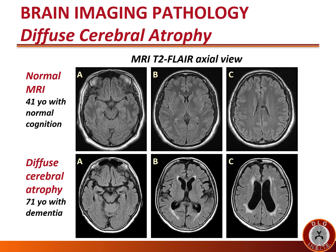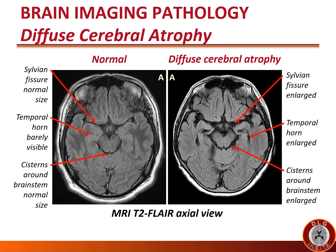Now let's appreciate the appearance of diffuse cerebral atrophy on brain imaging, comparing MRI FLAIR axial images in a 41-year-old with normal cognition versus a 71-year-old with dementia. In the normal patient, the sylvian fissure is normal in size, the temporal horn is barely visible, and cisterns around the brain stem are normal in size. In the patient with dementia and atrophy, the sylvian fissure and temporal horn are enlarged, and the cisterns around the brain stem are more prominent.